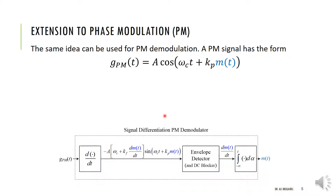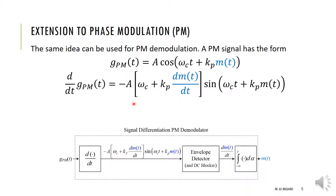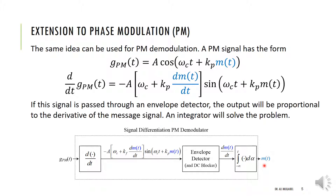We can extend the same idea to phase detection. Starting with the general form of phase modulation and applying the same block: once we differentiate, we get the derivative of the message. After envelope detection, the output will be proportional to the derivative of the message. To retrieve the original message, we simply add an integrator at the output. So if the signal is passed through an envelope detector, the output is proportional to the derivative of the message, and an integrator solves the problem.